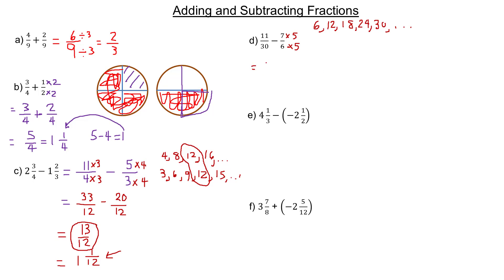The 11 thirtieths we can leave alone. Then 6 times 5 in the denominator is 30, and 7 times 5 is 35.